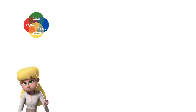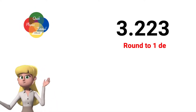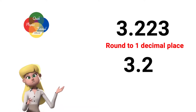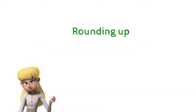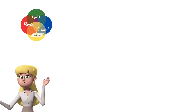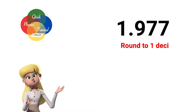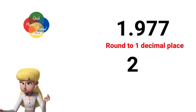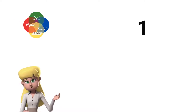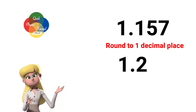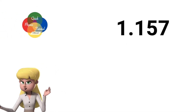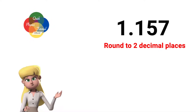Remember that when rounding off numbers, the next adjacent digit must be 4 or below. For example, if I want to round 3.223 to 1 decimal place, the answer should be 3.2. And when rounding up numbers, the next adjacent digit must be 5 and above. For example, if I want to round 1.977 to 1 decimal place, the answer should be 2.0. If I want to round 1.157 to 1 decimal place, the answer should be 1.2. If I want to round 1.157 to 2 decimal places, the answer should be 1.16.